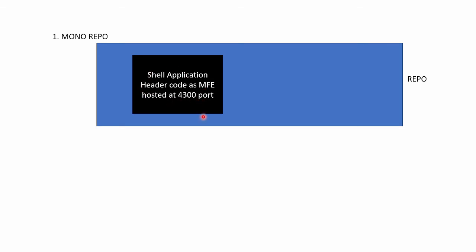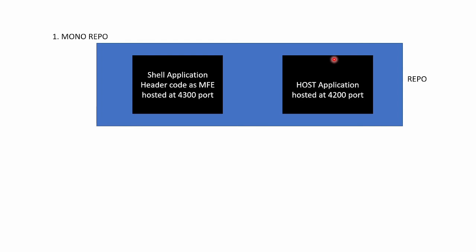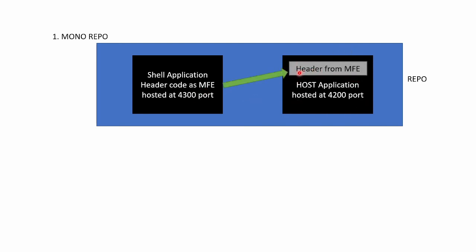Now this shell application should expose this header code so that another application, which will be known as the host application, can consume it. We will have another application inside the same repository called host application and it is hosted at port 4200. This host application will consume the frontend code that is being exposed from the shell application, which is the header code. So the host application is displaying the header which is coming from the MFE that is hosted on a different server.